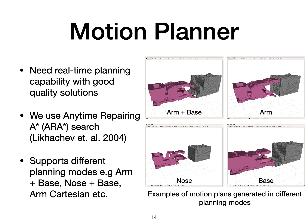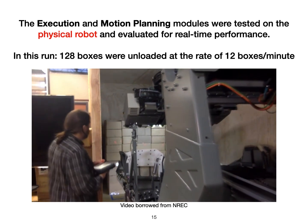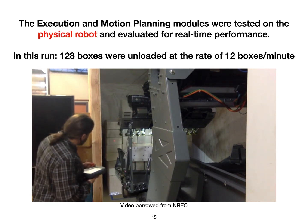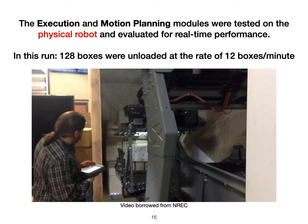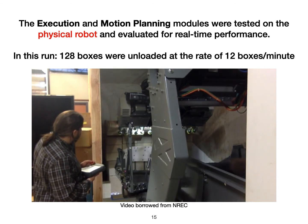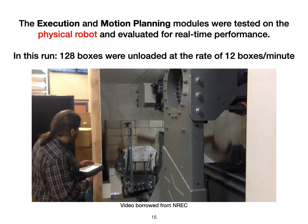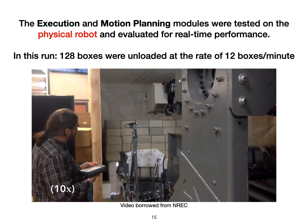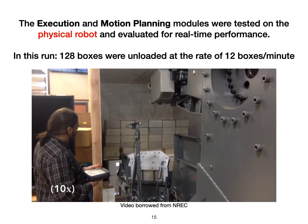Having discussed all the modules, let us look at the experimental results. We evaluated the performance of our execution and motion planning modules on the physical robot. In this run, we can see the robot executing the hardcoded strategy inside a trailer with a stack of boxes. Our execution module instantiates the abstract actions within the hardcoded strategy into specific poses according to the current box configuration. The motion planner quickly generates the corresponding robot joint trajectory. Both instantiation and planning happen in real time, leading to 128 boxes unloaded within this run at the rate of 12 boxes per minute.